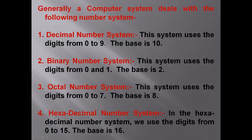We will revise our chapter. First we will revise number system. Generally a computer system deals with the following number systems. Decimal number system uses digits from 0 to 9, and its base is 10. Binary number system uses only the digits 0 and 1. The base of this system is 2.